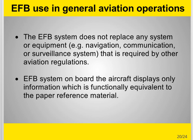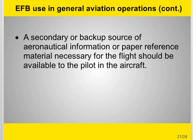The EFB system does not replace any system or equipment — such as navigation, communication, or surveillance systems — that is required by other aviation regulations. The EFB system on board the aircraft displays only information which is functionally equivalent to paper reference material. A secondary or backup source of aeronautical information or paper reference material necessary for the flight should be available to the pilot in the aircraft.